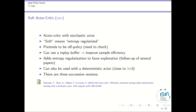Soft actor-critic is quite related to TRPO and PPO, but just by using a replay buffer and having an actor-critic approach with a stochastic actor, you get the best of both worlds between DDPG on one side and TRPO/PPO on the other. The entropy regularization term means that if your policy favors a large entropy, it favors exploration, allowing you to converge to a better optimum. Without it, you might get stuck in a local minimum. Entropy regularization was previously studied in the soft Q-learning algorithm from the same authors and is a very important topic in deep reinforcement learning.